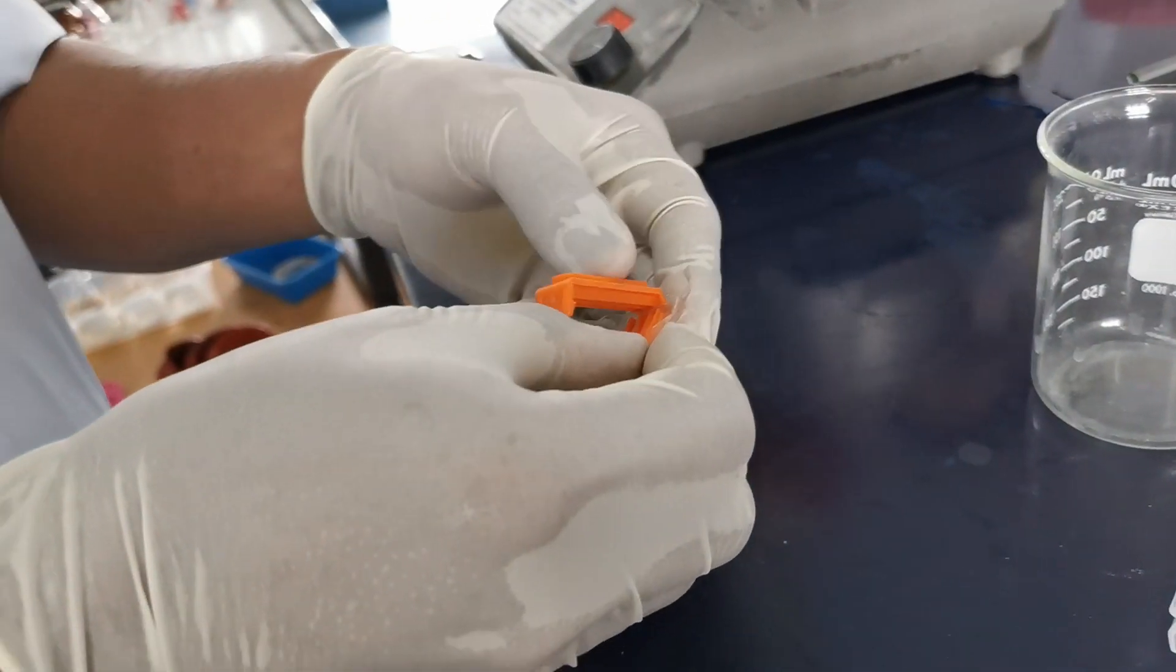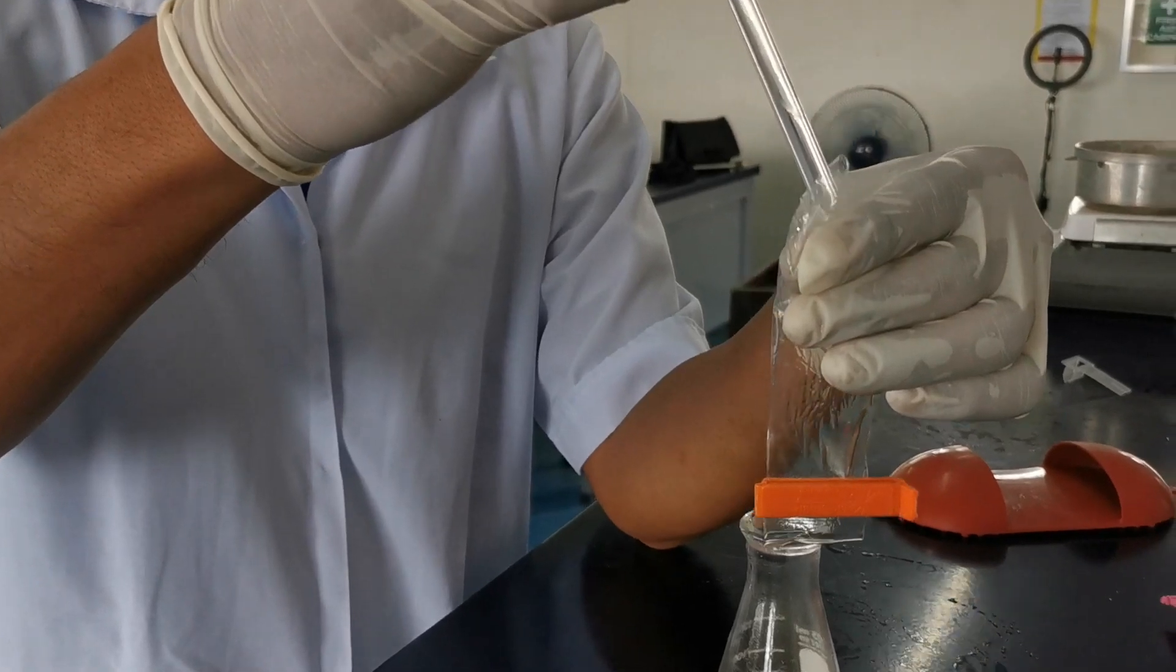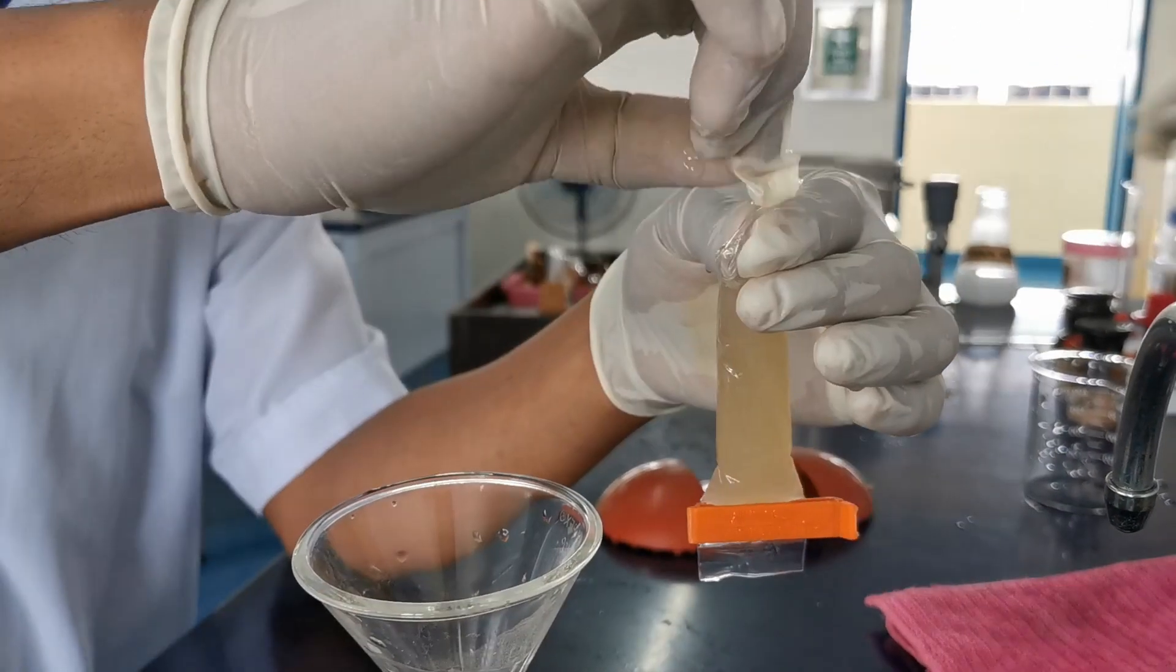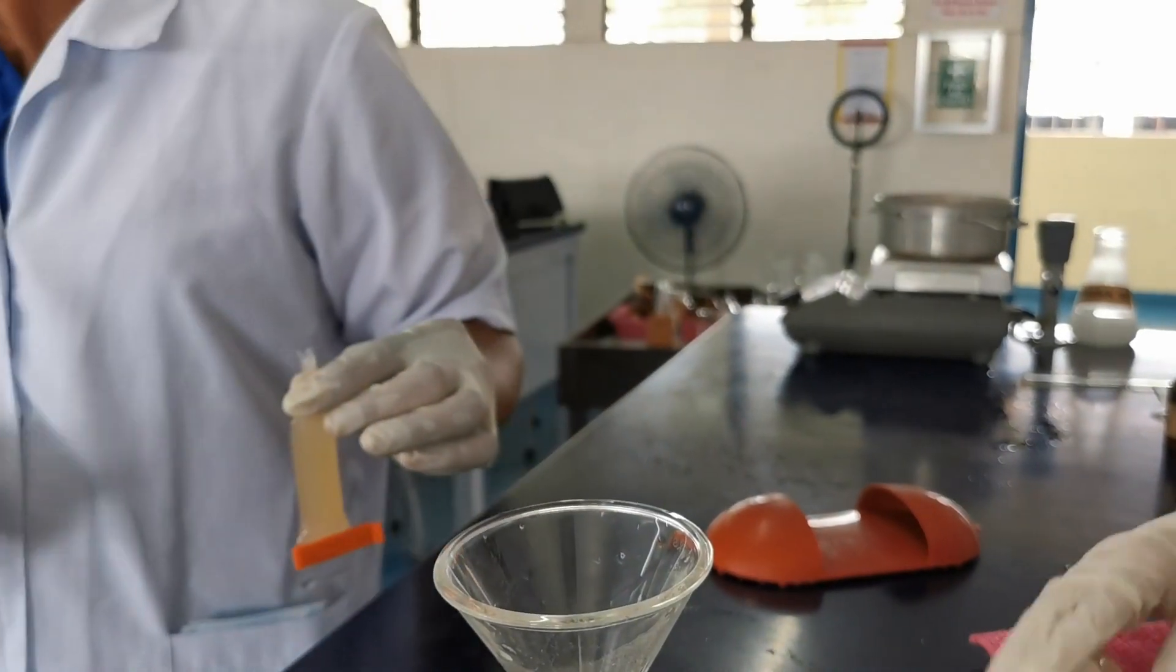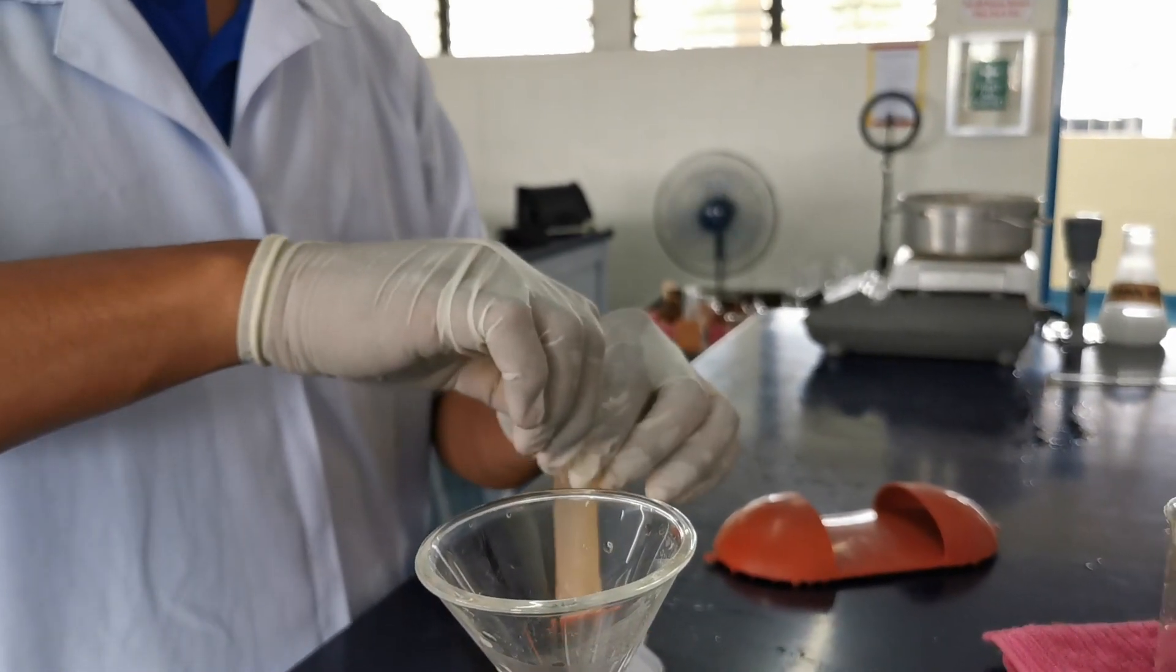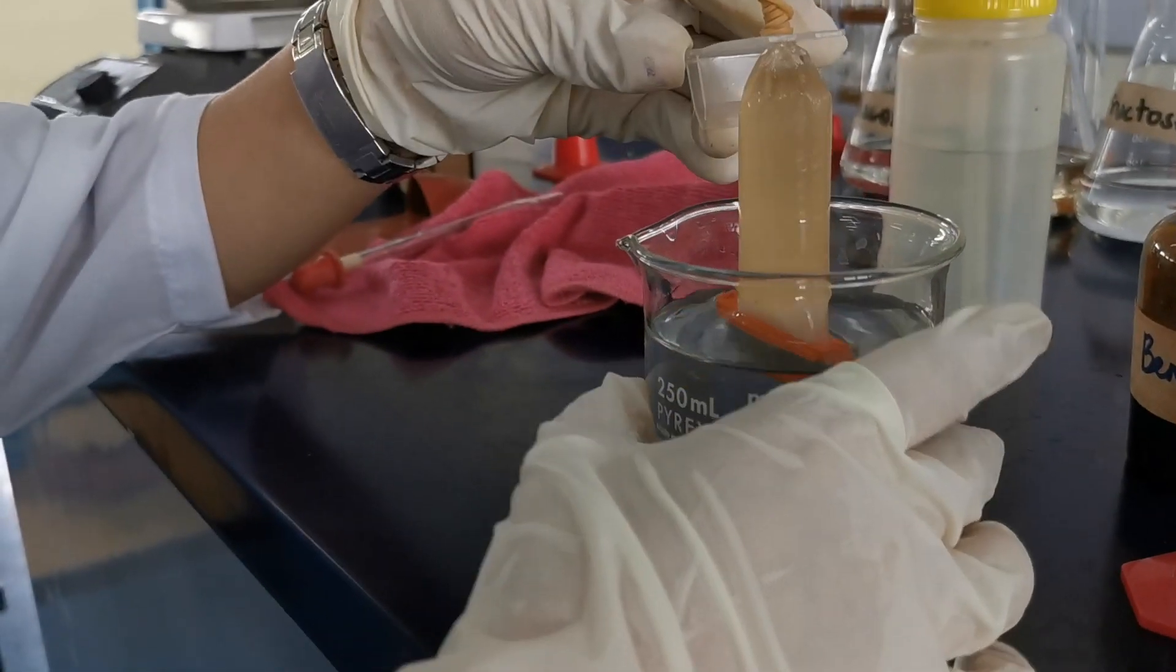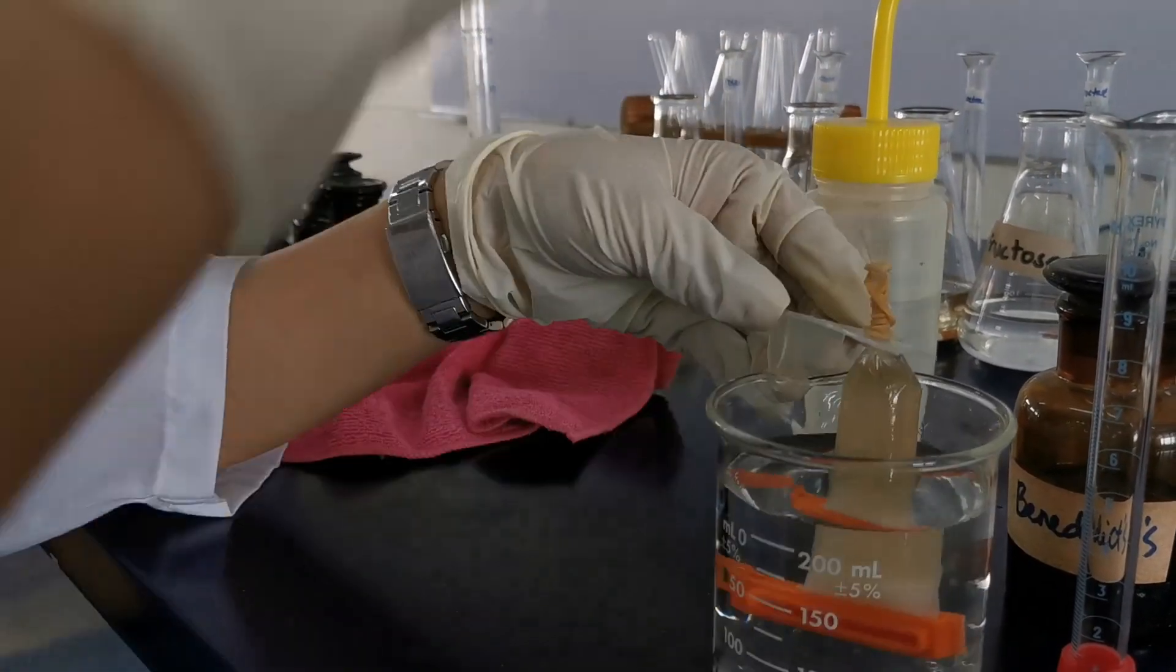Next, pour some of the starch, salt, sugar solution into the dialysis bag. Tie each ends using a clip. Suspend the setup in a beaker filled with distilled water, let it stand for 15 to 30 minutes. Afterwards, we test the water in the beaker for starch and sodium chloride following the same procedures during the filtration test.